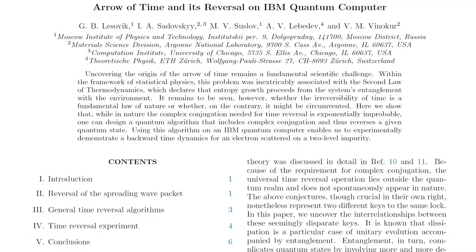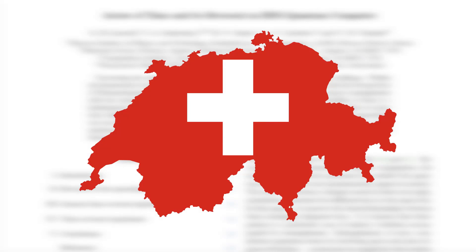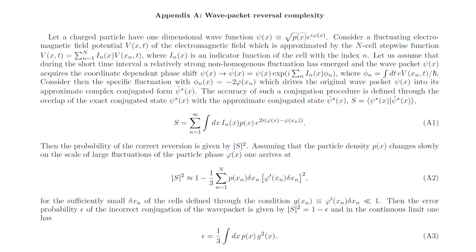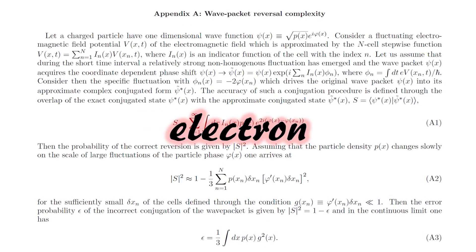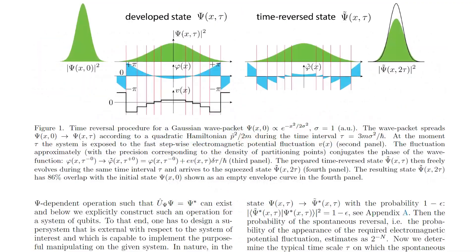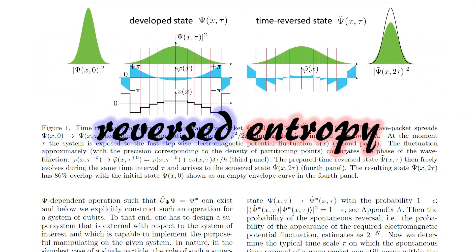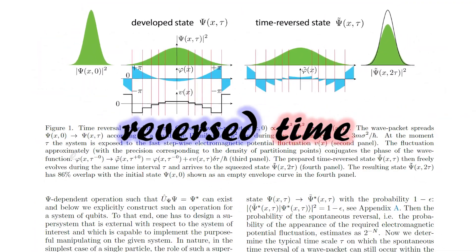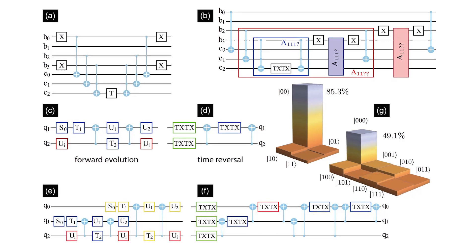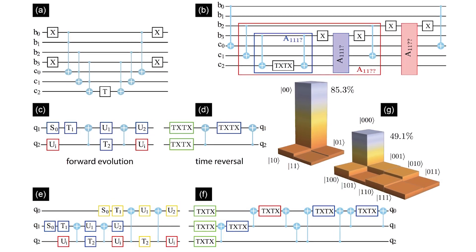So in 2019, physicists from Russia, Switzerland, and the United States calculated the odds of a single electron being inverted and moving in the direction of reversed entropy over forward time. They then simulated the process on a quantum computer to find out the success rate.